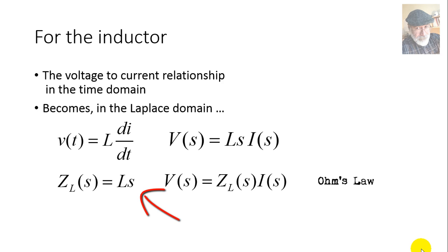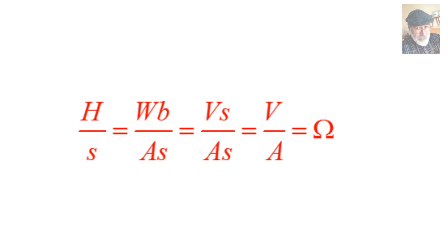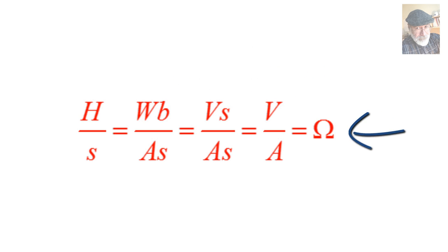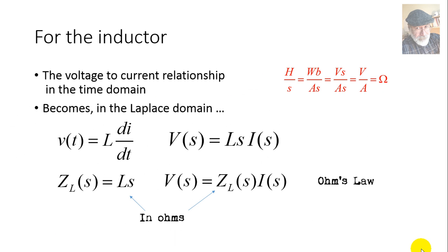What are the units of that impedance Z = Ls? Henries times s, and s comes in radians per second, which is 1/second. So the units are henries divided by seconds. But a henry is webers per amp, and a weber is volts times seconds. Seconds cancel seconds, and you get volts over amps — which is ohms. Indeed, the units of impedance are ohms, at least for the impedance of an inductor, Ls.